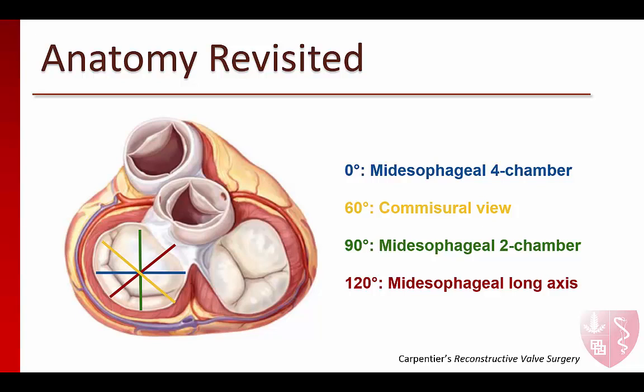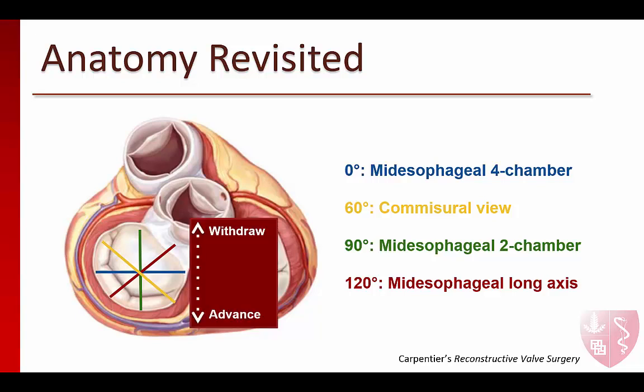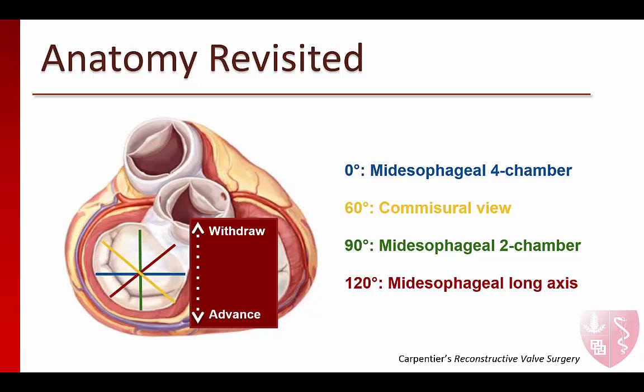Remember that TEE is dynamic, and you can't always reliably tell which part of the mitral valve you're looking at solely from knowing which view you're in. For example, while in the mid-esophageal four-chamber view, withdrawing the probe will show you A1 and A2, while advancing the probe will show you the more posterior aspects of both the anterior and posterior leaflets.